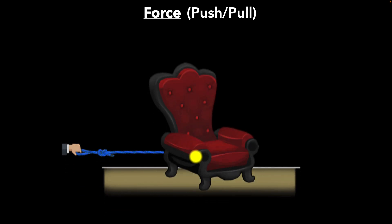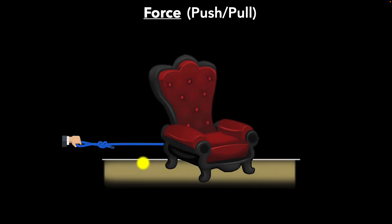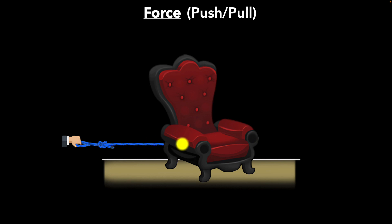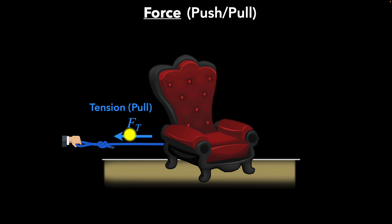Let's start with a concrete example. What are the different forces you can identify on this particular chair? The rope is pulling on the chair. Forces due to ropes, chains, or cables are called tension force. It's a contact force and it's a pulling force.